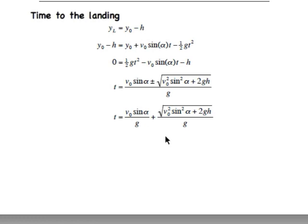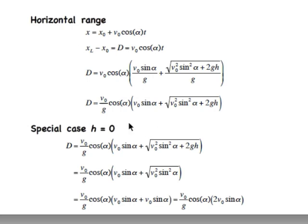Well, that doesn't look so bad. That's time, so we're going to take this time and we'll plug it into our x equation to find the actual range. Here's what we do. We've got our horizontal range, x equals x0 plus v0 cosine alpha t. Remember that we're solving for d, so we have d equals v0 cosine alpha t.